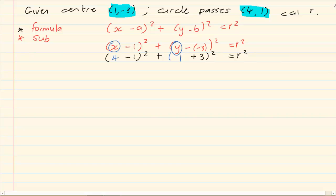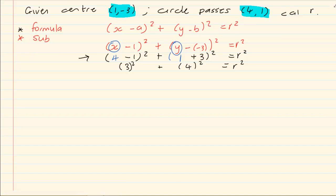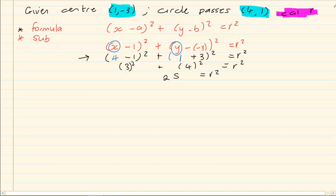You don't need to do the full expansion — you can simply say 4 minus 1 is 3, so we have 3 squared, plus 1 plus 3 is 4, so we have 4 squared equals r squared. At this level we see students doing unnecessary expansion — remember, you only expand when you have unknowns. Since 3 and 4 are constants, simply compute: 9 plus 16 equals 25, so r squared equals 25. The question asks for r, so we root it and r equals 5. Only the positive version because radius is always positive.